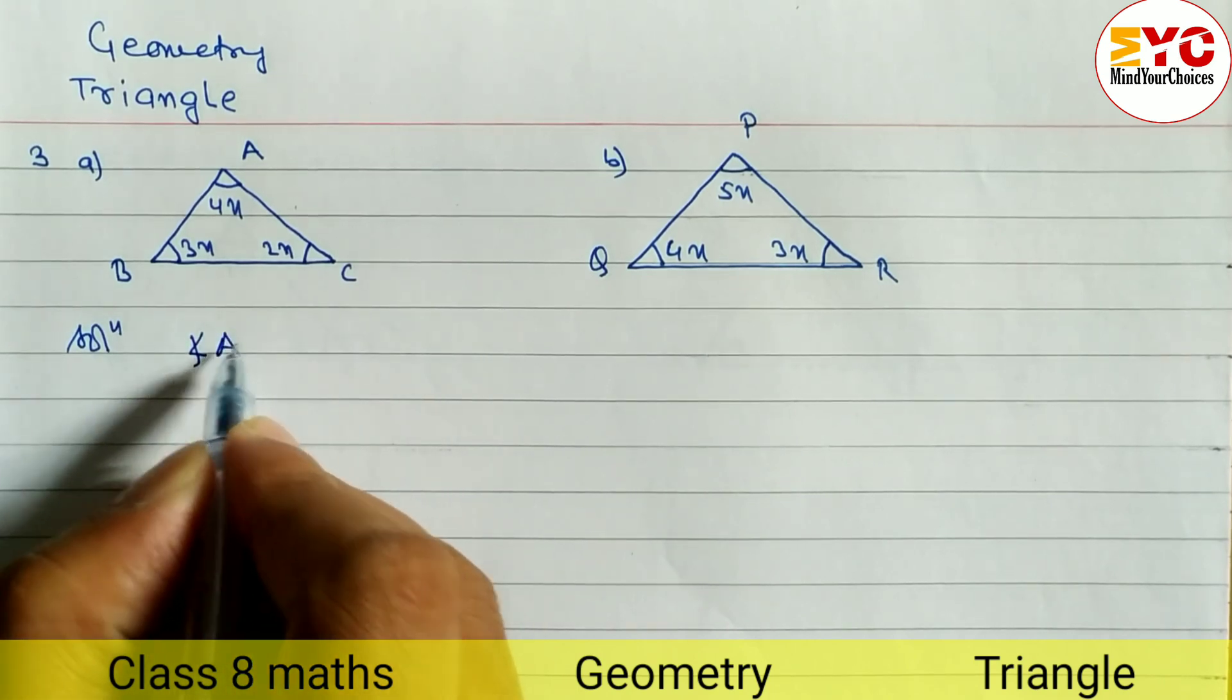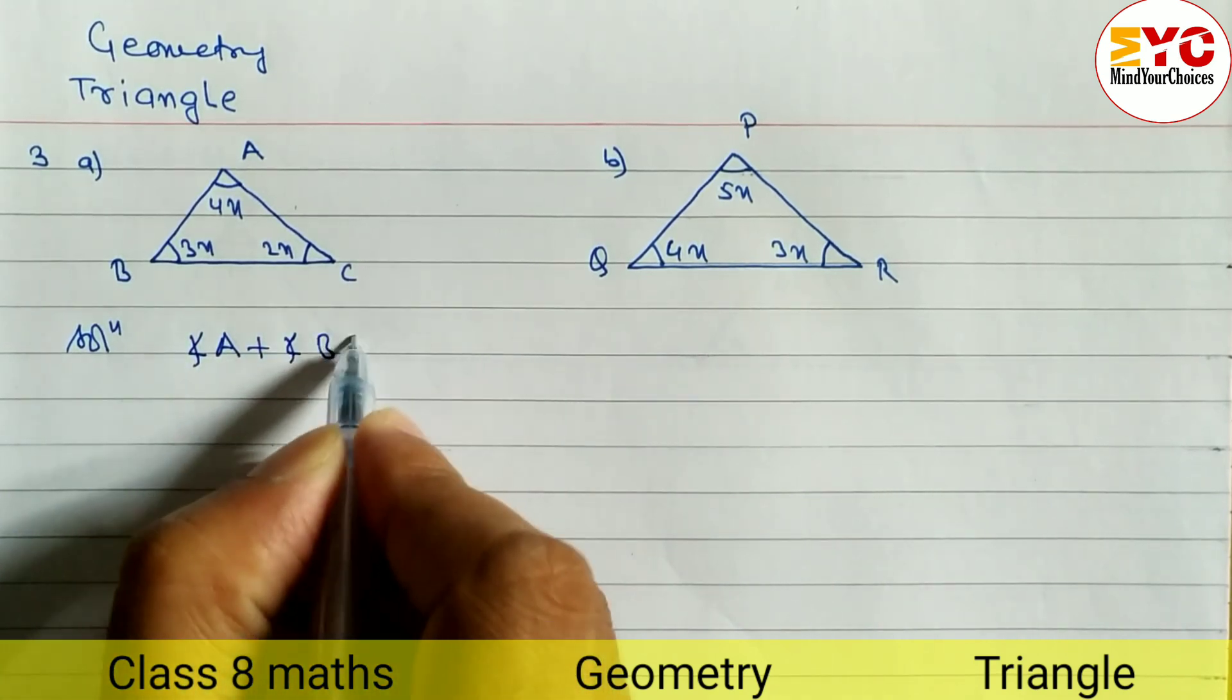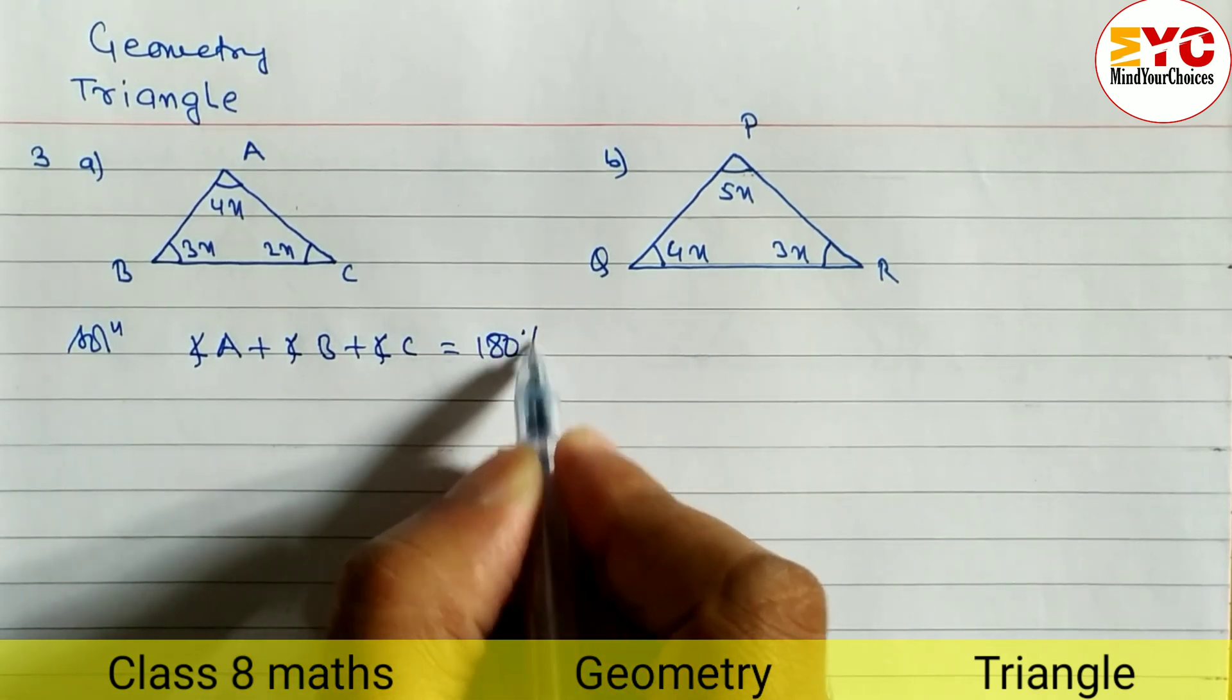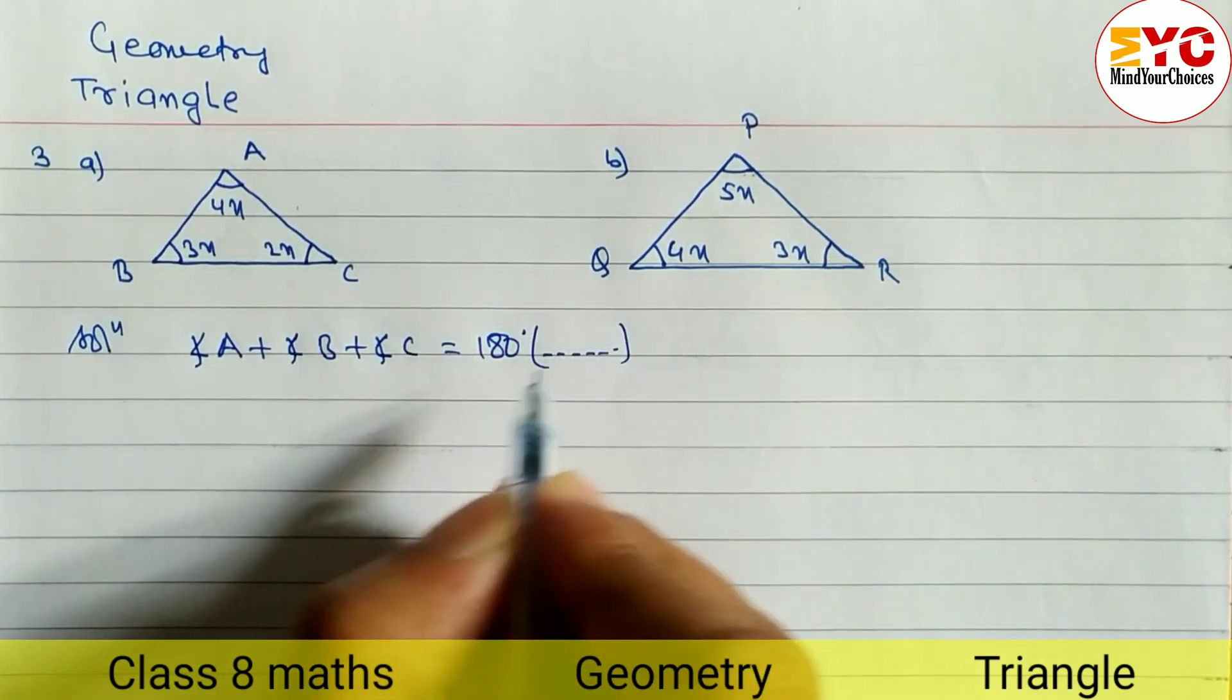So angle a plus angle b plus angle c is equal to 180. The reason you have to write down the sum of angle of the triangle.